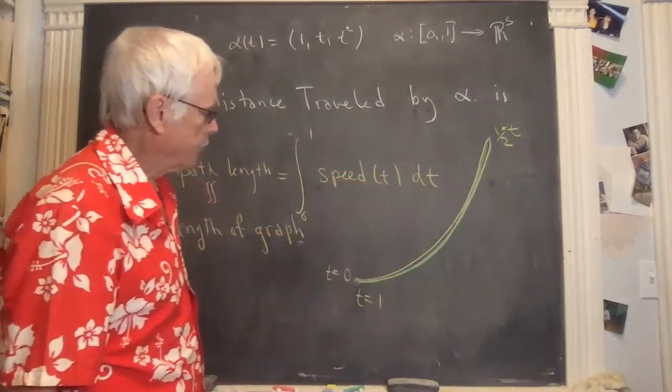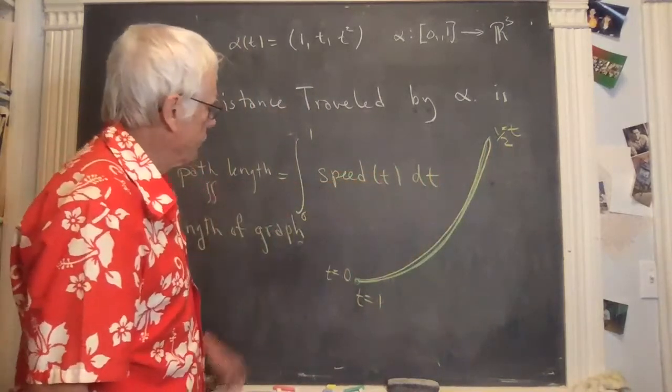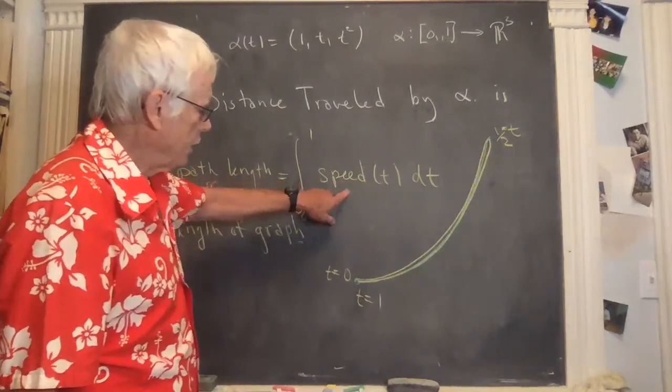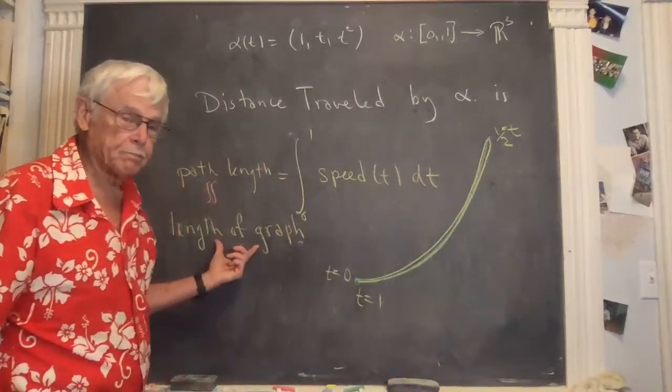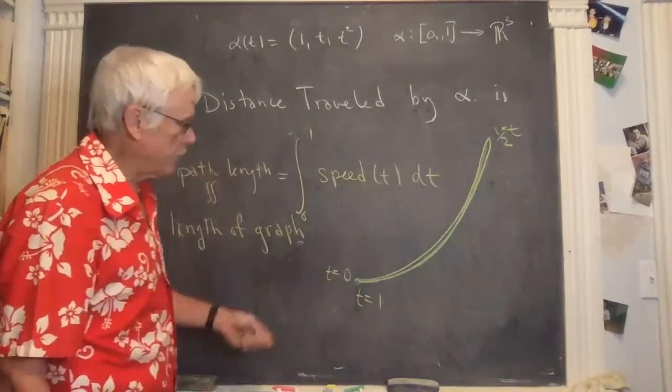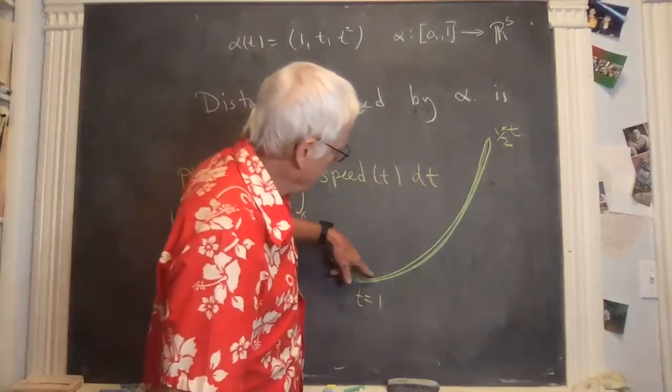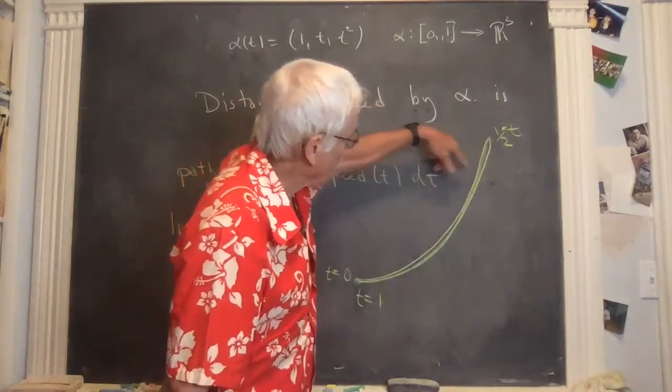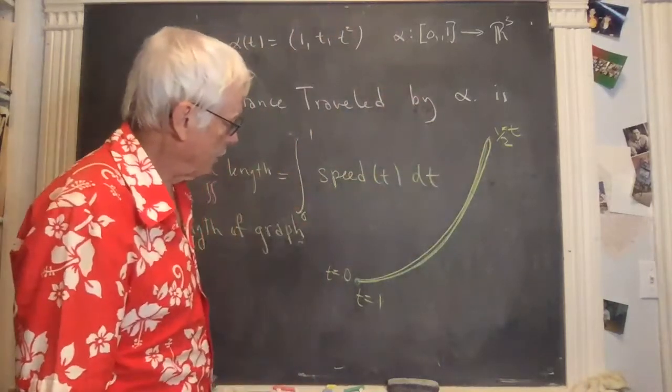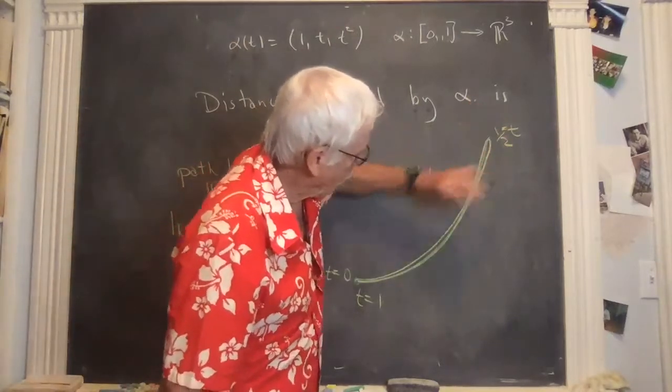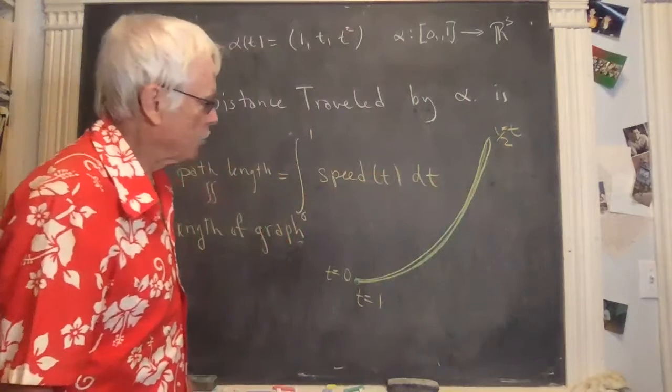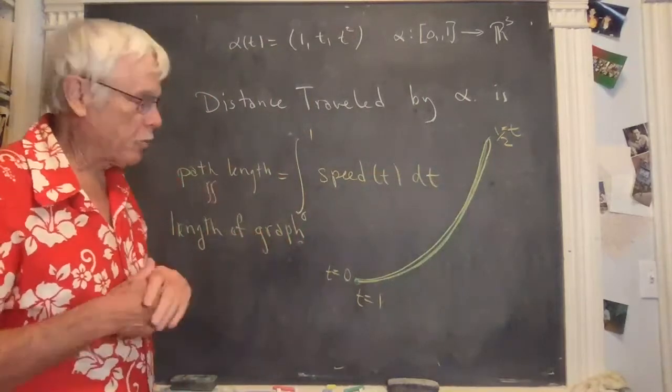If the ladybug actually flies the route this way, out and back, then what you get by integrating the speed is the entire distance traveled. So you get twice the graph length. So what this integral is giving you is the distance traveled according to this formula. And if the path is duplicated at any point, then it will give you more than the actual length of the graph.